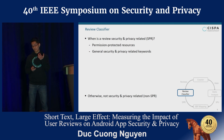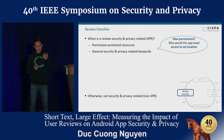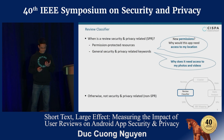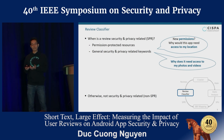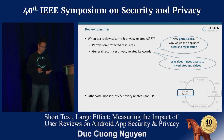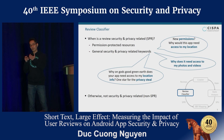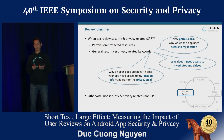To give you examples of how an SPR looks like: First, 'Why would this app need access to my location?' — here the user is talking about location permission. Second, 'Why does it need access to my photos and videos?' — the user is talking about storage permission. Third, 'Why on good green earth does your app need access to my location info? One star for the privacy steal.' — here the user not only talks about location but additionally expresses concern regarding privacy.